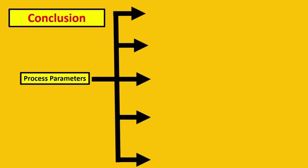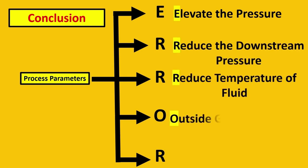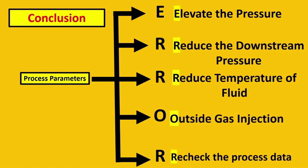I hope you found the video valuable. In conclusion, the parameters can be divided into five basic categories: E stands for elevate the pressure, R stands for reduce the downstream pressure, R stands for reducing the temperature of fluid, O for outside gas injection, and finally R for rechecking the process data. I hope you've liked this video. Next Saturday we'll meet again with another amazing video. Thank you and have a great day ahead. Happy learning.